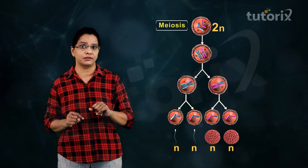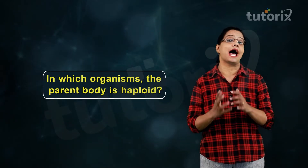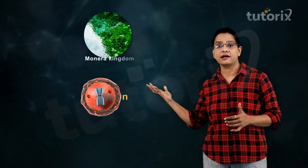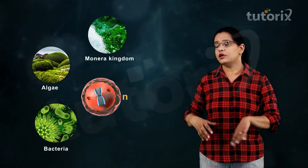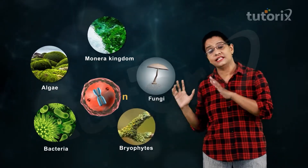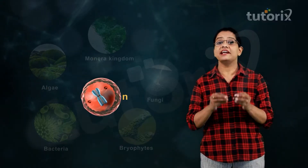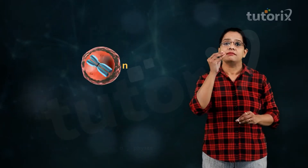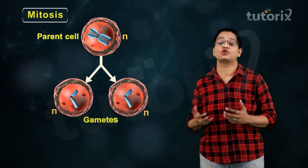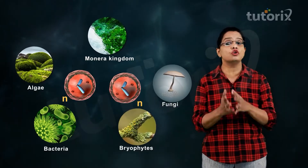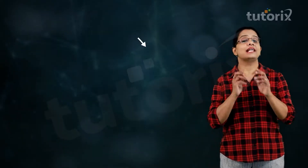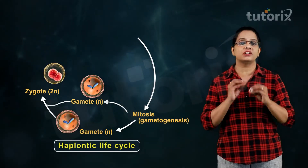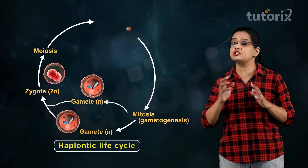The parent body is haploid in organisms like Monera, bacteria, algae, and some bryophytes and fungi. In these organisms, to maintain the chromosome number (n), mitotic divisions occur to produce gametes. These organisms follow a haplontic life cycle, in which the zygote — produced by fusion of gametes — is diploid and undergoes meiosis to produce the parent body.